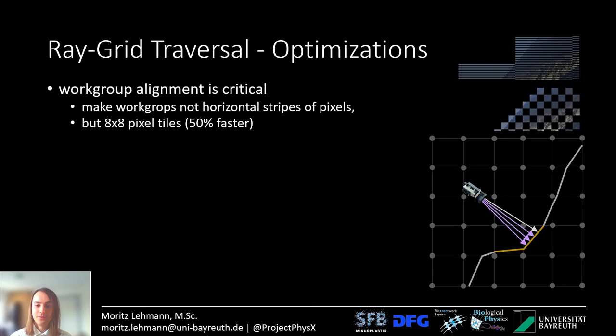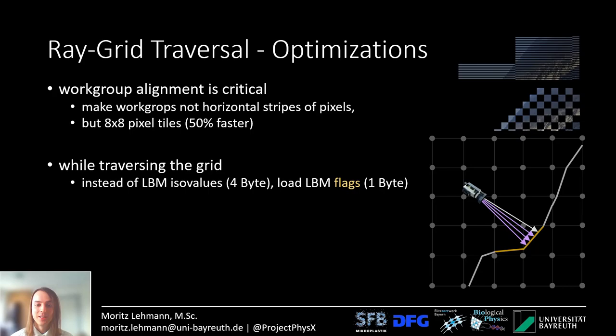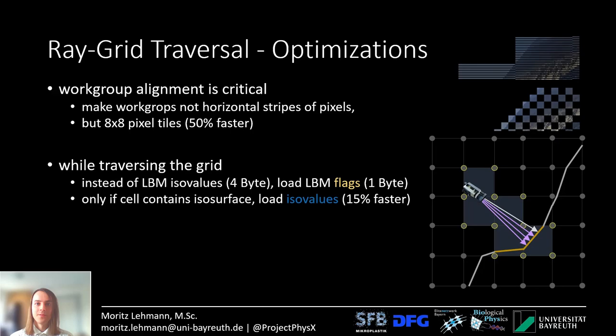Another trick specific to Lattice Boltzmann: while grid traversing, instead of loading the ISO values, you only load the lattice flags. The lattice flags are 1 byte each while the ISO values are 4 bytes each. The flags alone can already tell you if there might be an interface in the grid cell, and only then do you load the ISO values — this makes it again about 15% faster.